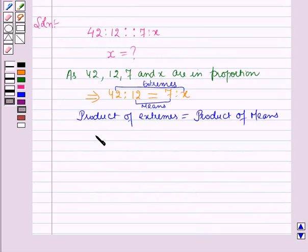This implies 42 into x, these are the product of the extremes, is equal to product of the means which means 12 into 7.